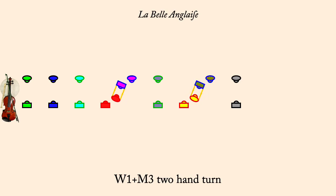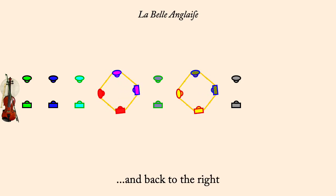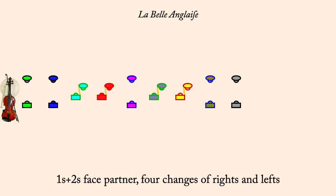Ones and threes circle left. And back to the right. Ones and twos, four changes of rights and lefts.